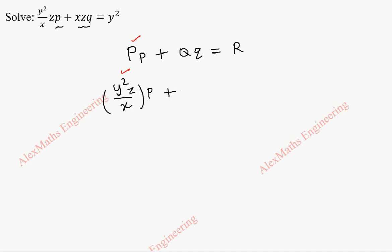So, even here, we take x, z, then into q. So, we can understand what is capital Q. And the last item is y square. So, now we are going to write capital P separately, which is y square z by x. Capital Q is x, z and capital R is y square.